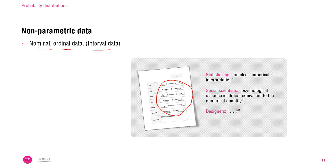Regarding this data, the statisticians who are restricted to the accuracy of the data will deny that the interval data are parametric. They would say the data are no clear numerical interpretation. But the social scientists would accept the interval data as parametric. They would say psychological distance in interval scale is almost equivalent to the numerical quantity. As a design researcher, I would advocate the social scientists' thinking.